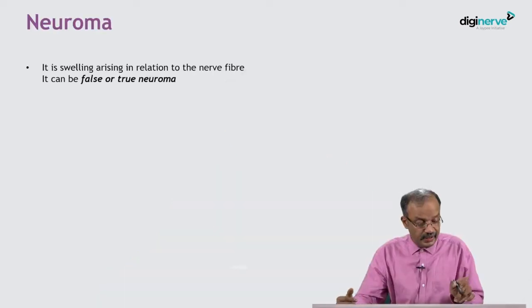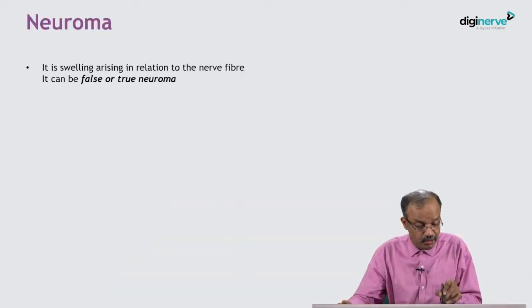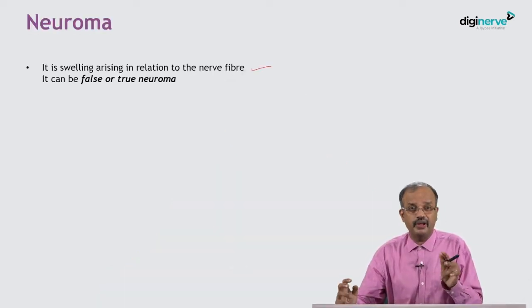But understanding the meanings of these three is very, very important. What is neuroma? It is a swelling arising in relation to the nerve fibre. It is exactly defined as having two types: true neuroma and false neuroma.